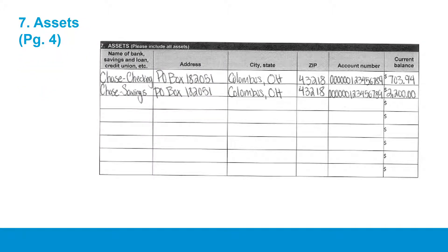Now please turn to page 4 of your application. Section 7 is where you will list all of your assets. Assets include current savings, retirement, checking, CDs, or any other accounts held by the applicant or co-applicant. You must include the name of the institution, account number, and current balance of each account. We will verify these accounts at the time of your consultation using the official statement from the institution which holds them.